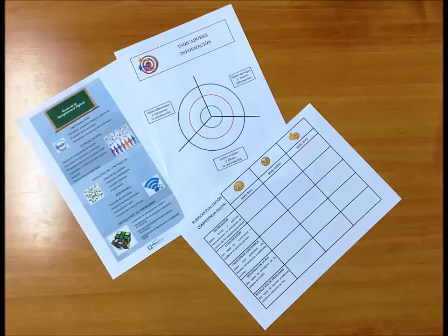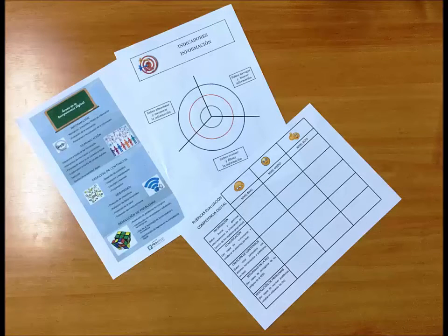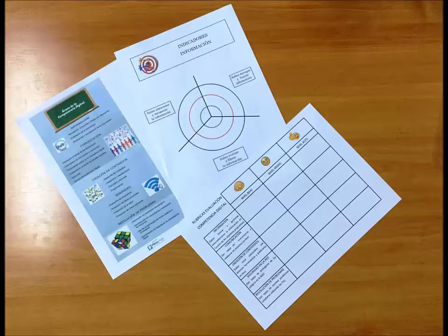And finally, the latest idea from the Technology department is that we have to self-assess our digital competence. They gave us a sheet with the digital competence areas, another with a target diagram where instead of throwing darts we put dots with a pen, and a template with emojis for what they call a rubric.